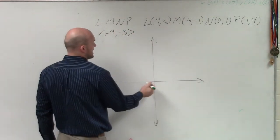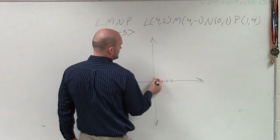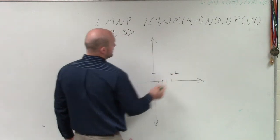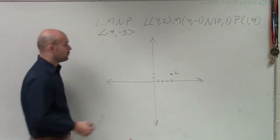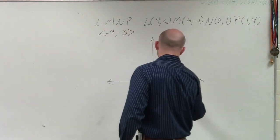So my first point is L, which is at 1, 2, 3, 4... 1, 2. And this is a quadrilateral. M is at 4, negative 1.